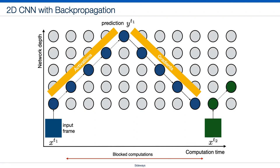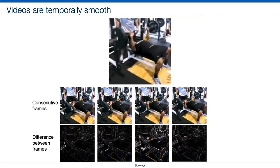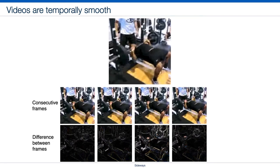However, Backprop blocks computations which leads to low throughput and limits model parallelism. But is this blocking necessary for processing videos where consecutive frames are almost the same?